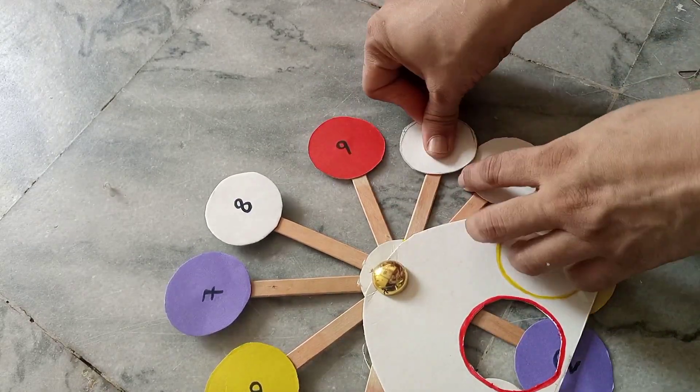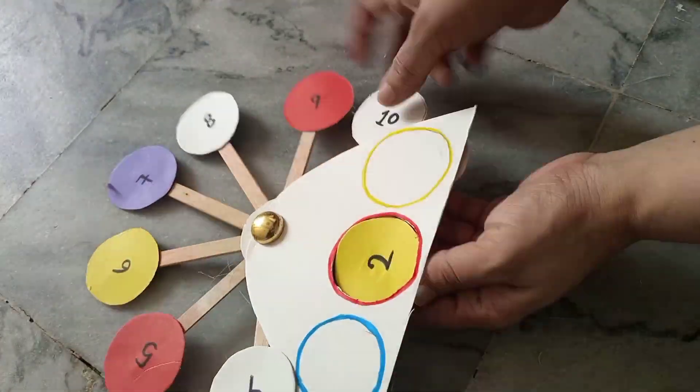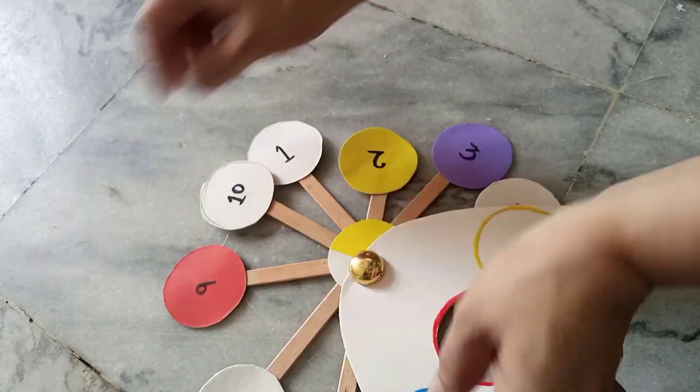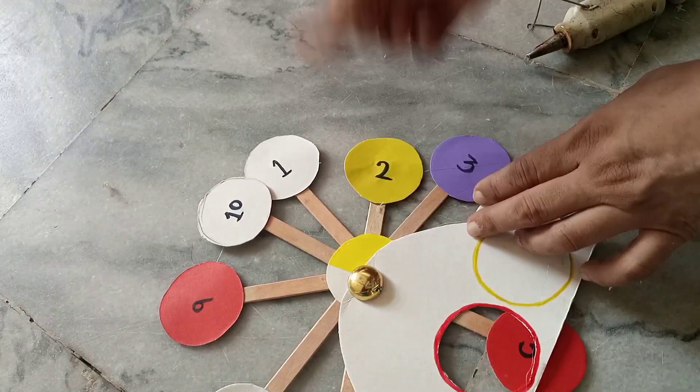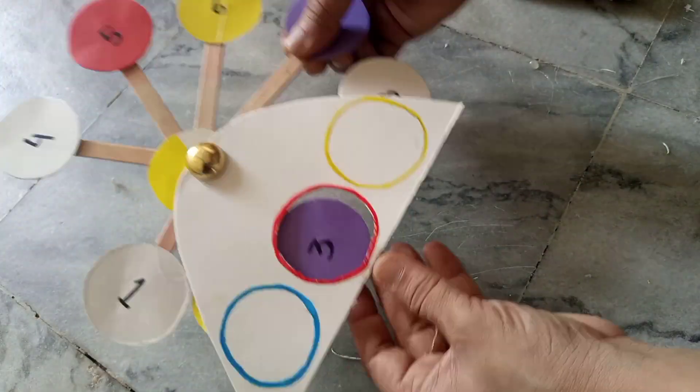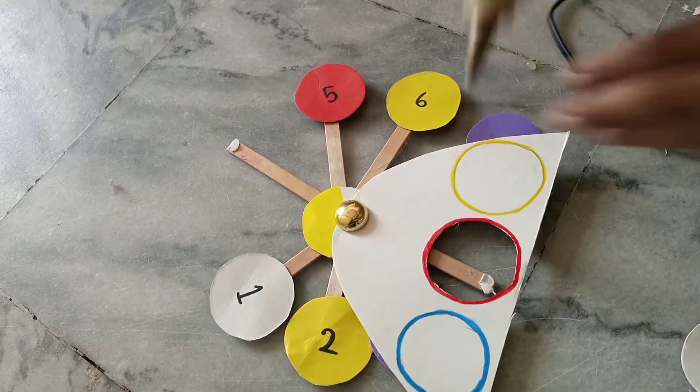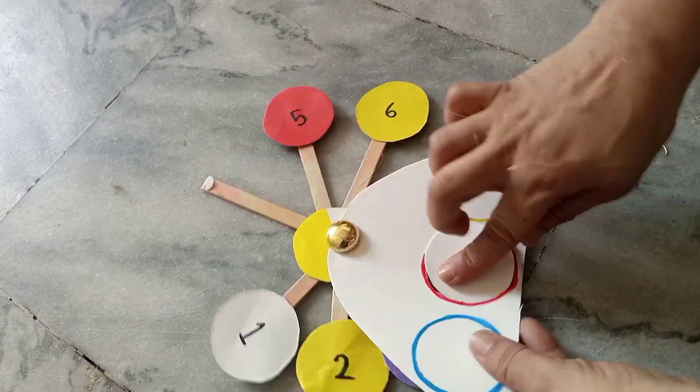My ice cream stick was a little longer so I made it smaller. You can also make it small like this and make sure your number is displayed like this. That's how it will look beautiful when it will move around in a round.